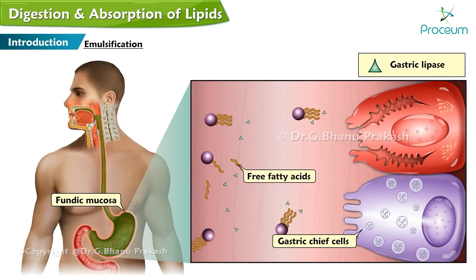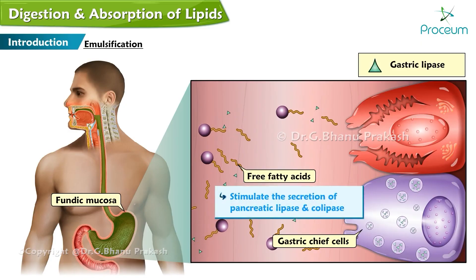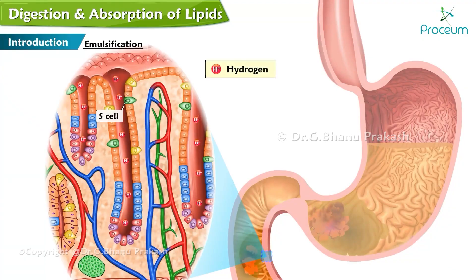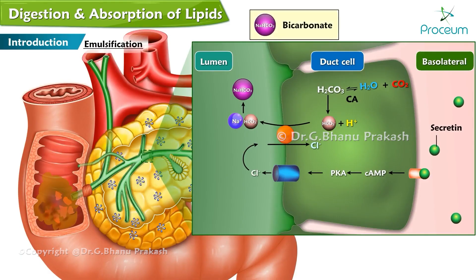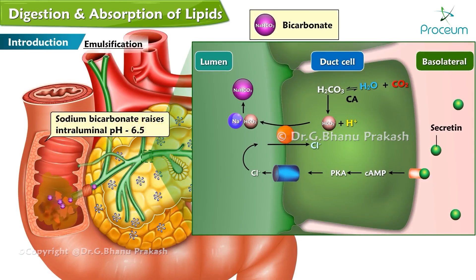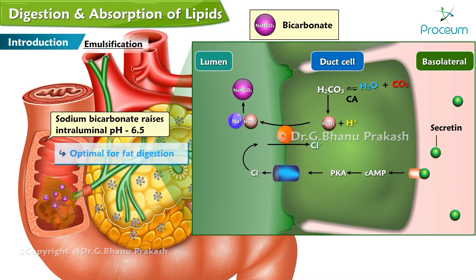Free fatty acids released by gastric lipolysis contribute to stimulating the secretion of pancreatic lipase and colipase. The entry of gastric hydrogen ions into the duodenum stimulates the release of secretin, which enhances pancreatic bicarbonate secretion. This raises the intraluminal pH to approximately 6.5, which is optimal for fat digestion.